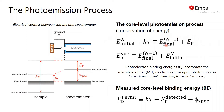We have the energy of the system in its final state with N minus one electrons. It is important to realize that the binding energy we measure with XPS with respect to the vacuum level is the difference between the initial and the final state of the system.